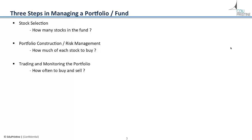The second step is portfolio construction. Here the fund manager decides how to allocate money among the stocks selected. He needs to identify sources of risk and construct the portfolio so that returns are maximized relative to risk. He also needs to adhere to client guidelines while constructing the portfolio.